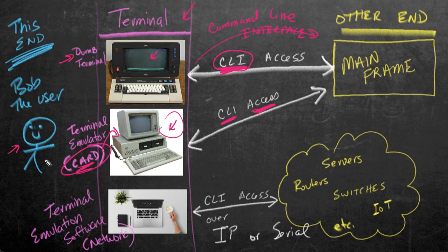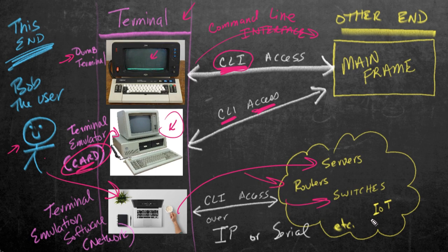So that would look something like this. Bob, instead of using a dumb terminal or an old computer with a terminal emulator card, could be on a computer with Putty or some other terminal emulation software. Then he could access servers, routers, switches, and IoT devices — if he needs CLI, command line interface access — where he can type in commands, get results, and do basic management of those devices at the command line.